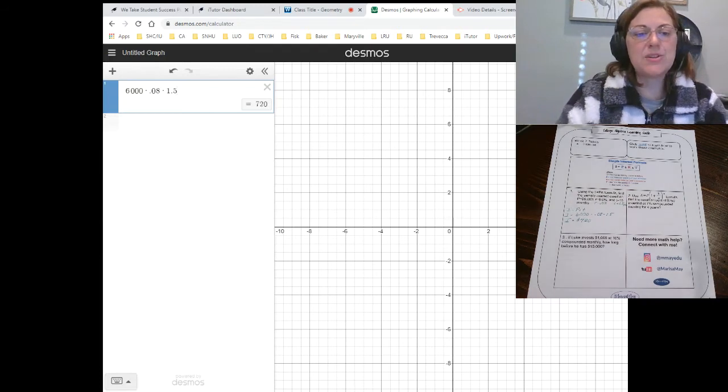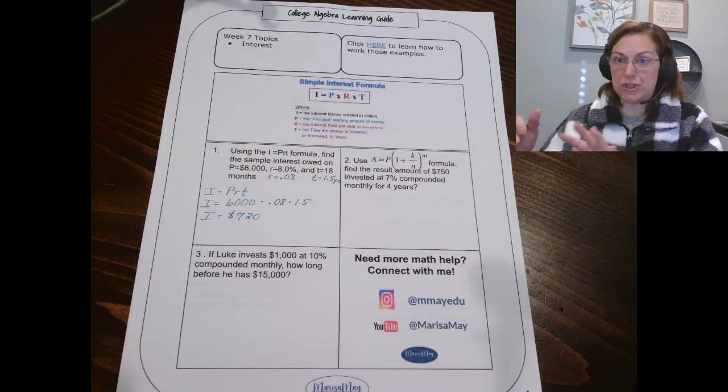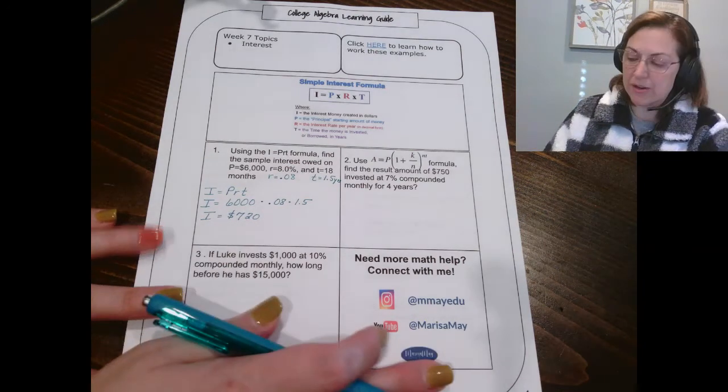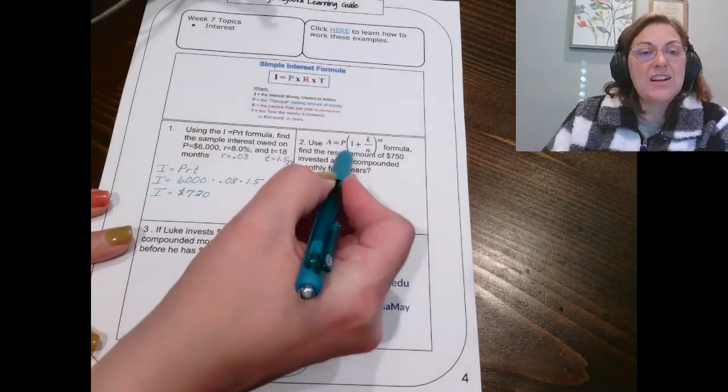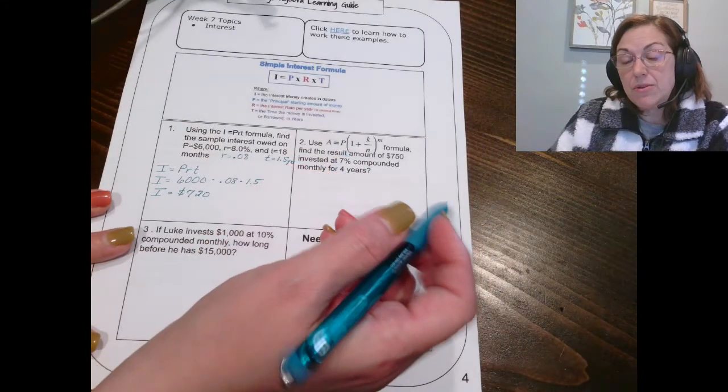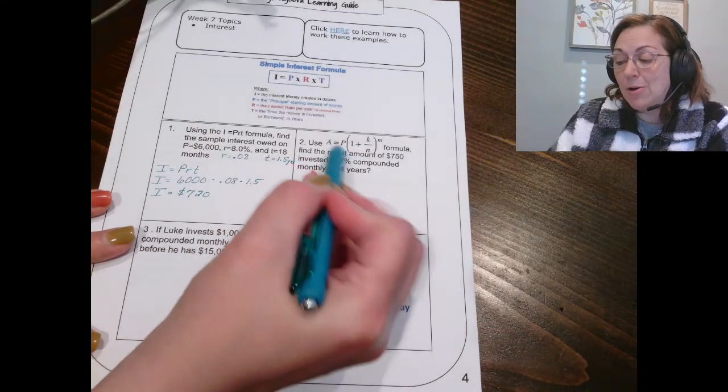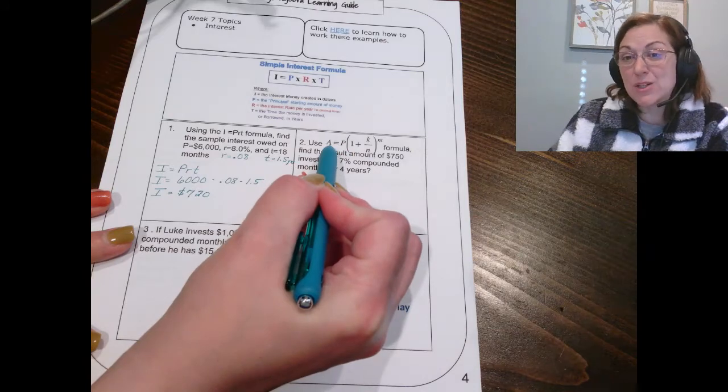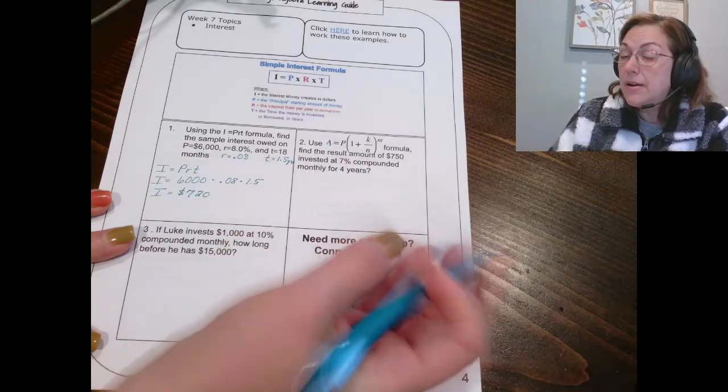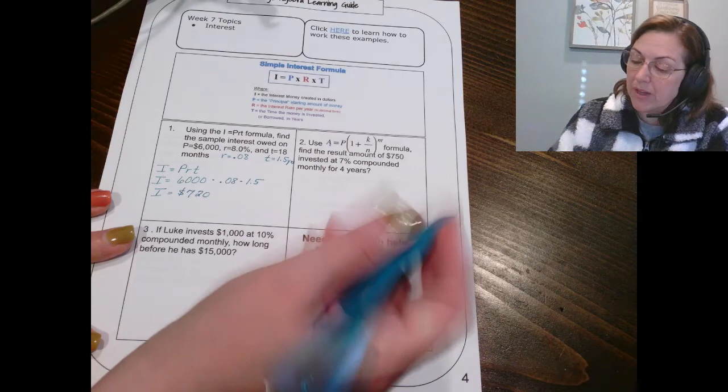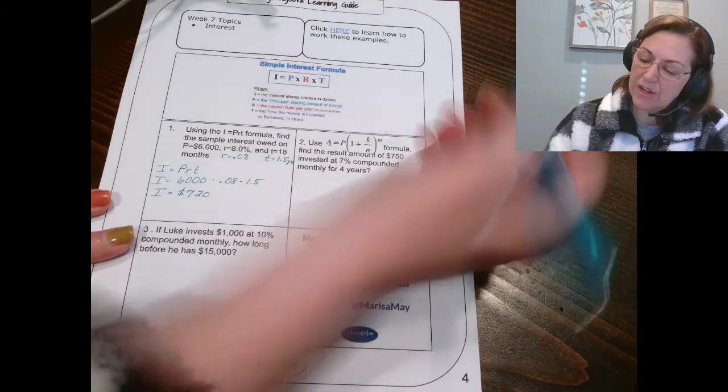All right, let's switch our view back. I want to set up number two on paper first and then I'm going to go to the calculator. So this formula actually gives us the amount of interest, the amount left over after interest is compounded, not simple interest. Okay, so a couple of things to know.